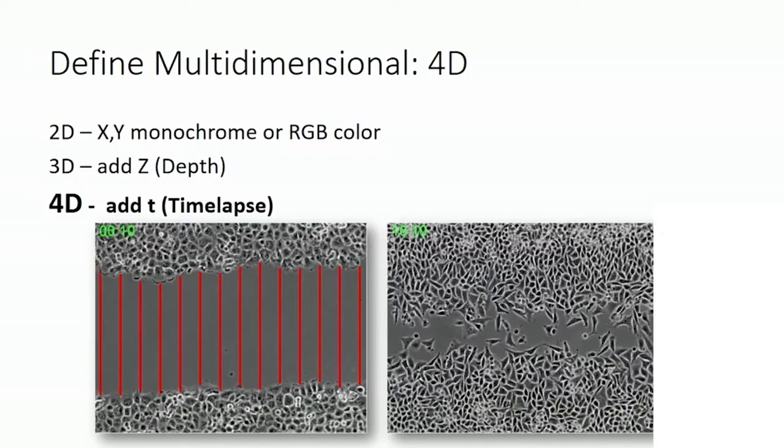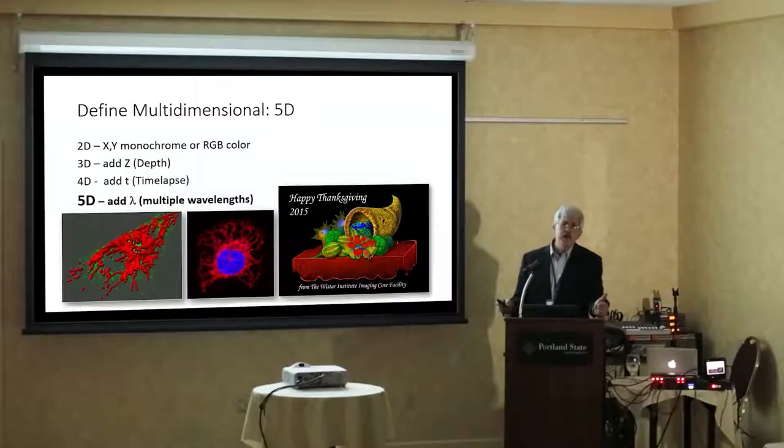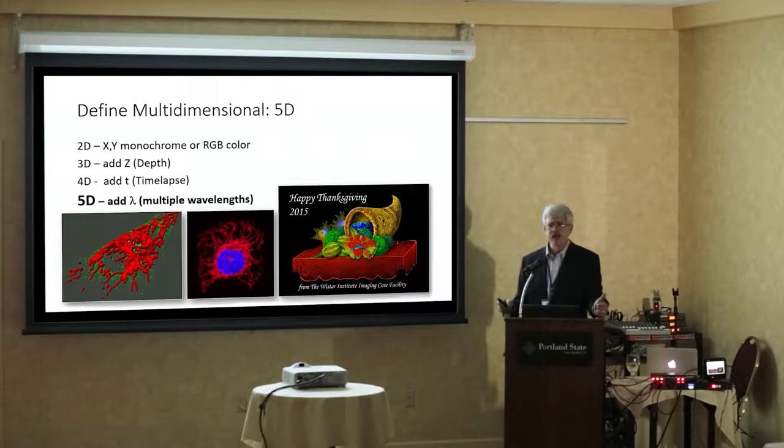5D? What's 5D? Well, we've been seeing these beautiful multicolor images. It's basically when you have more than one channel that you're dealing with — capturing things in multiple channels. One of them might be a bright field one; the others are generally fluorescence. We do a lot of fluorescence. So if you're dealing with more than one channel, you're dealing in 5D.